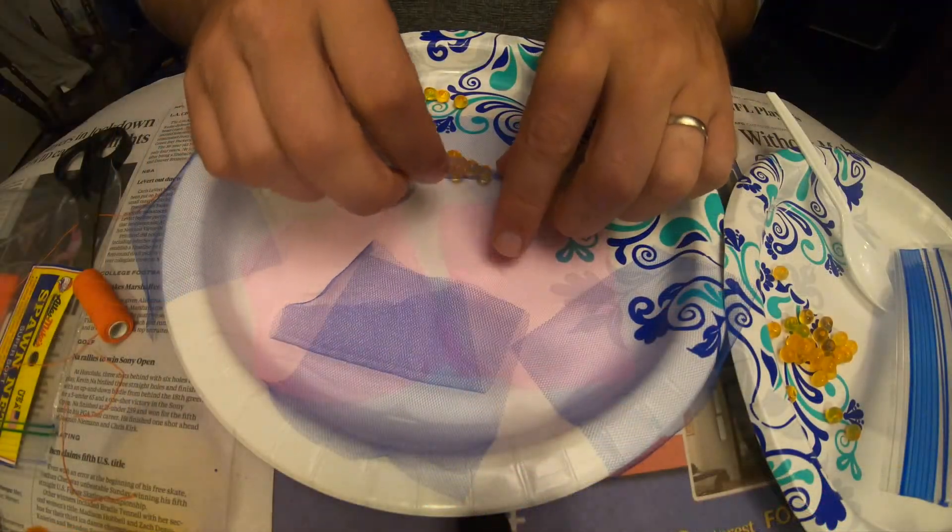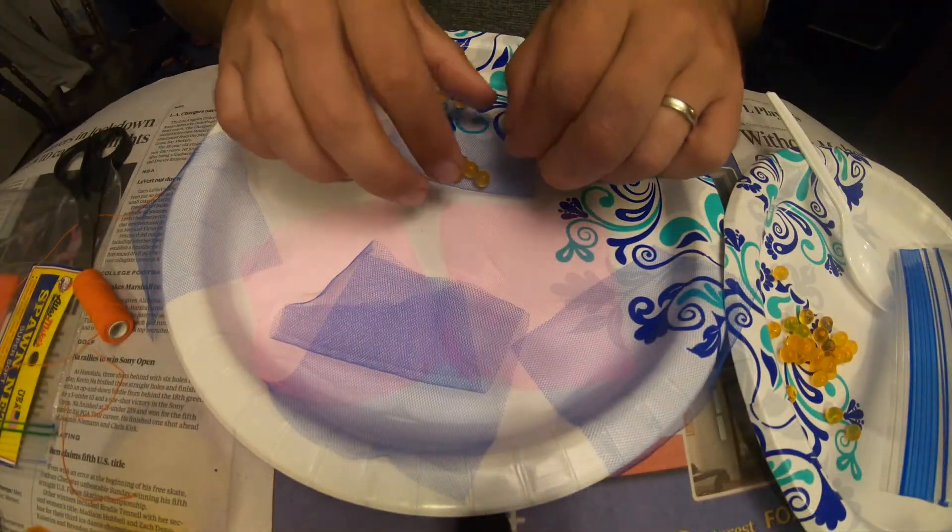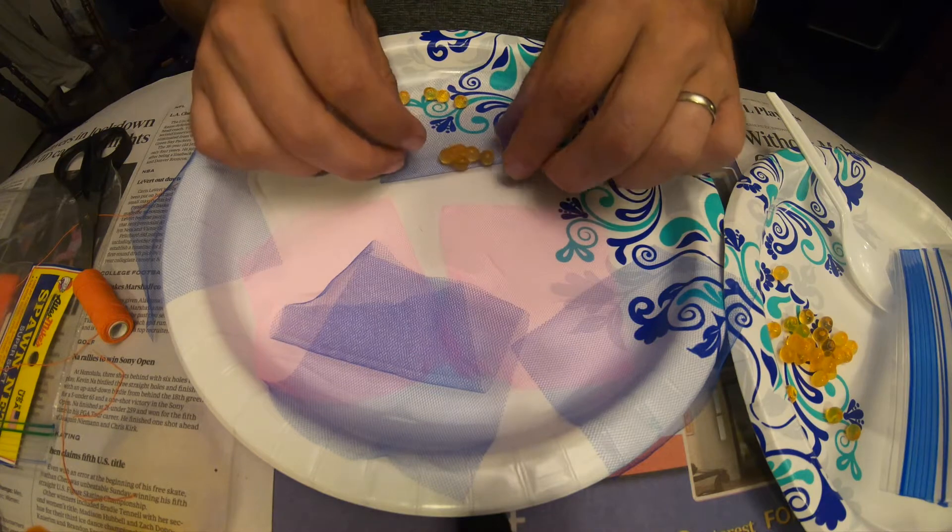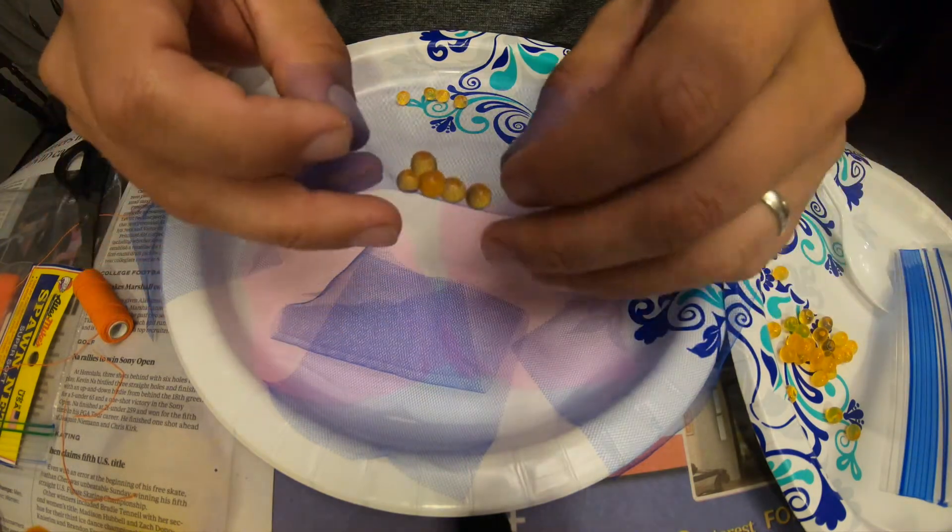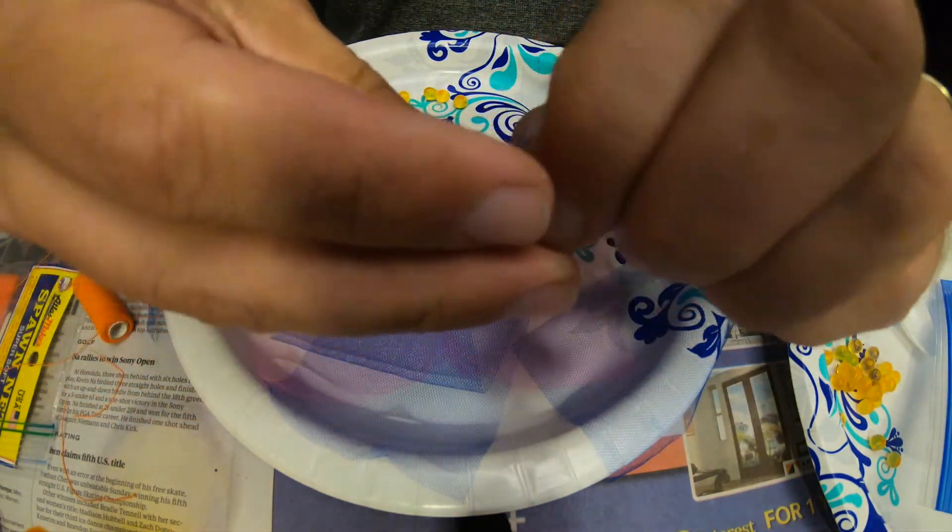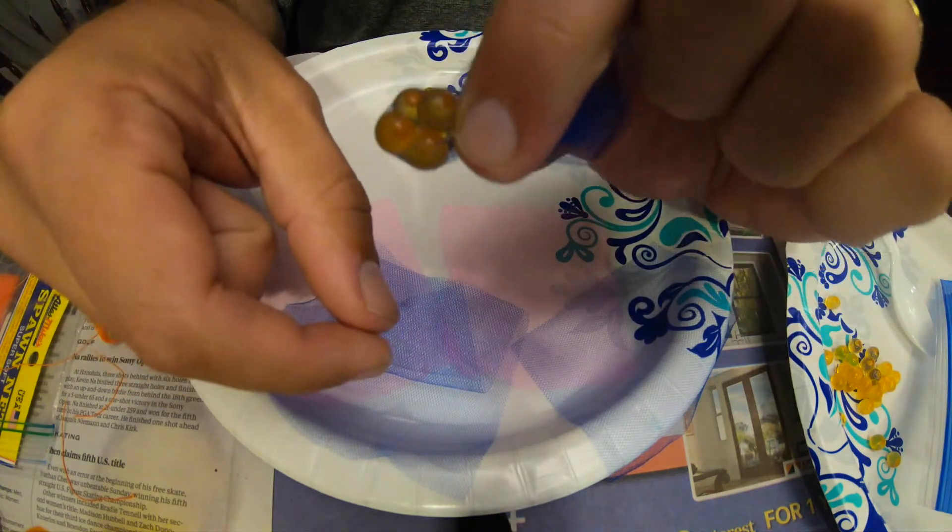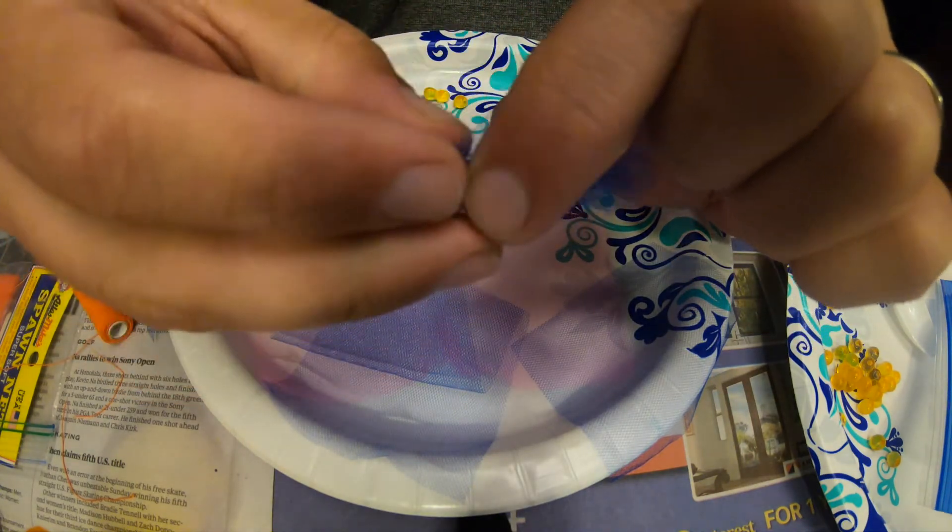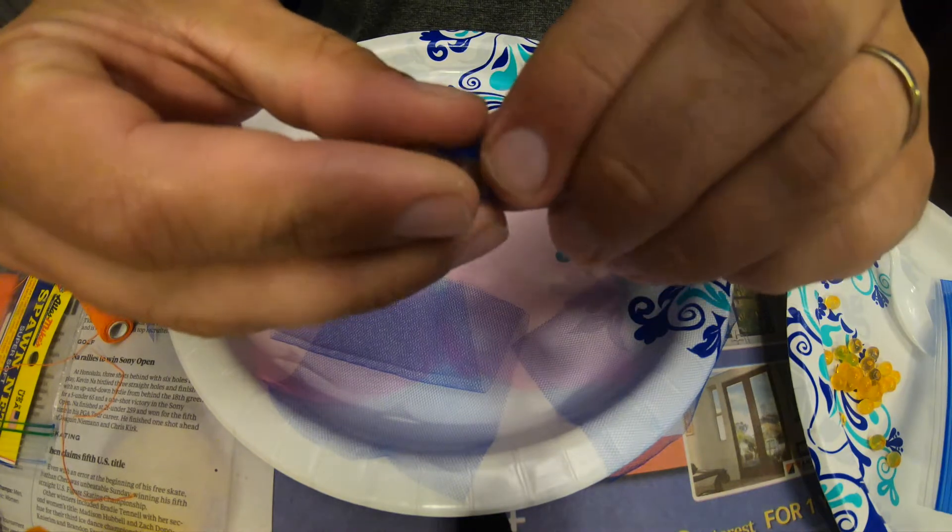What we're gonna do is we're gonna take our bag, our spawn netting, and we're going to fold it so you can see we got our eggs in there. We're gonna take all of our edges and we're gonna pinch them together. So now we have that, we have our eggs in our net, and then I'll kind of pull them all together here.